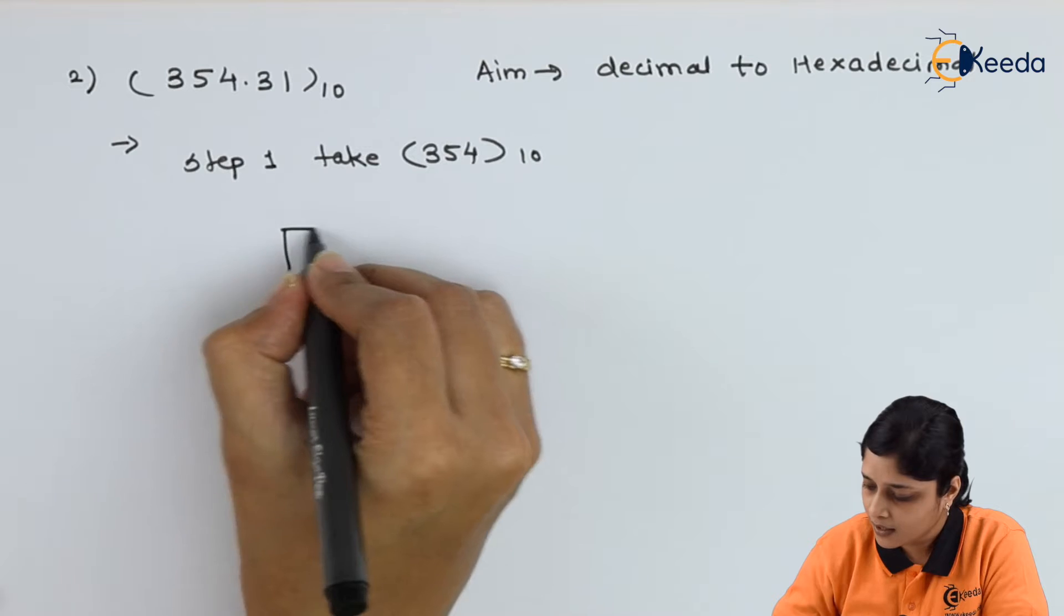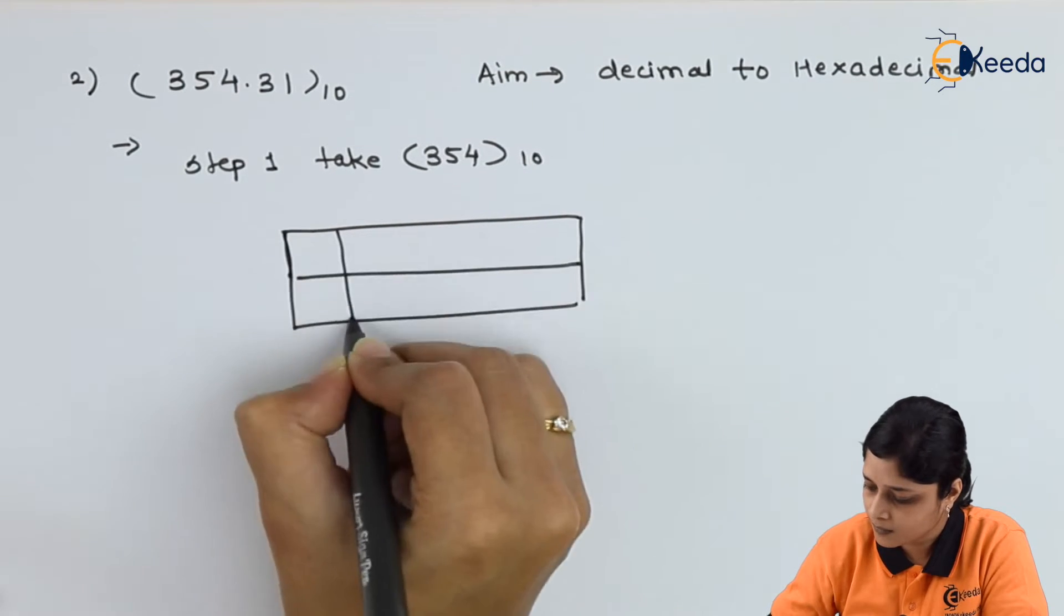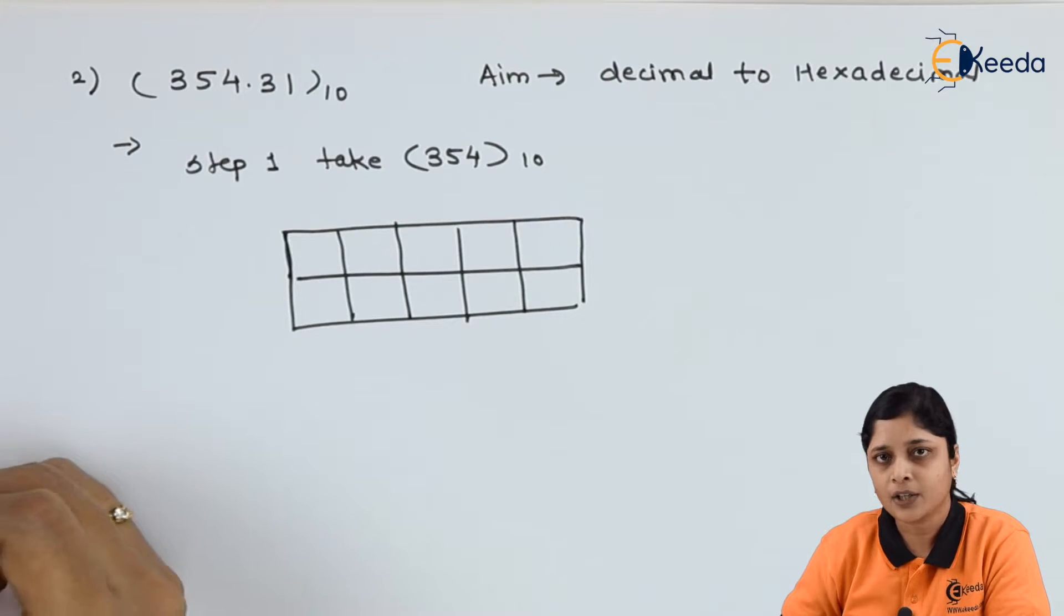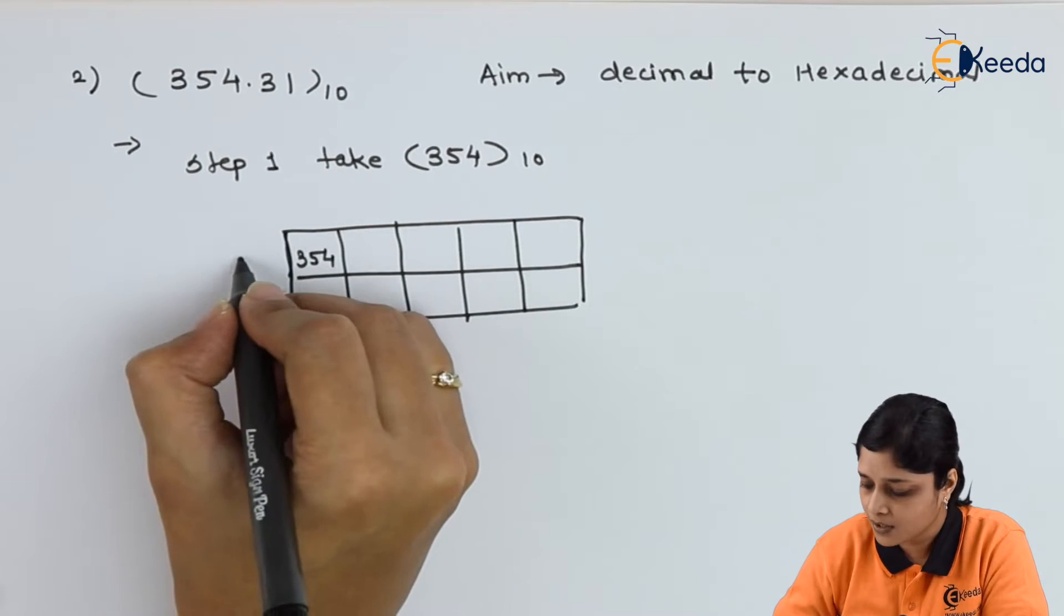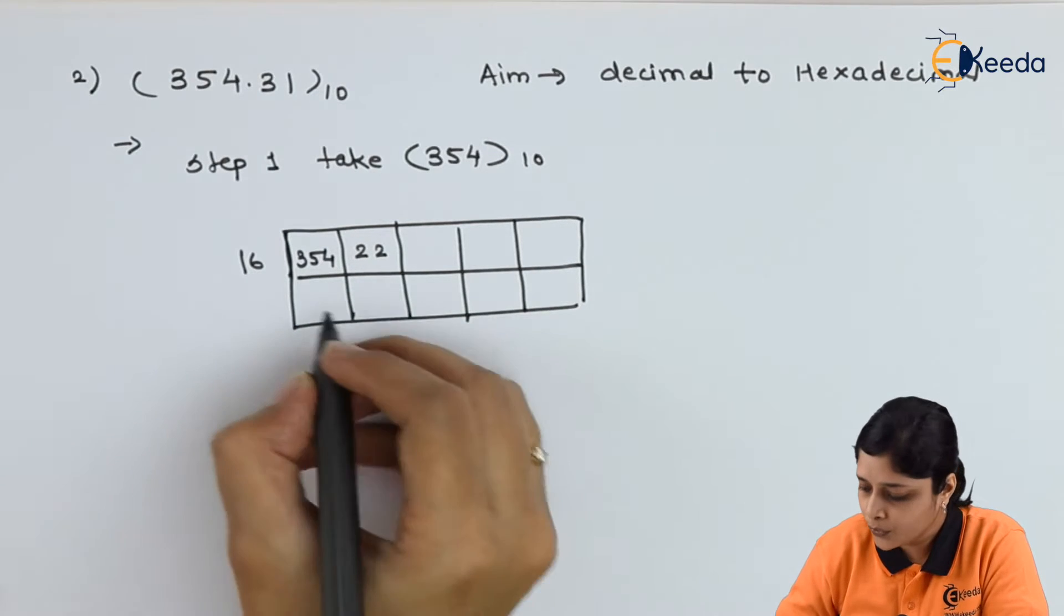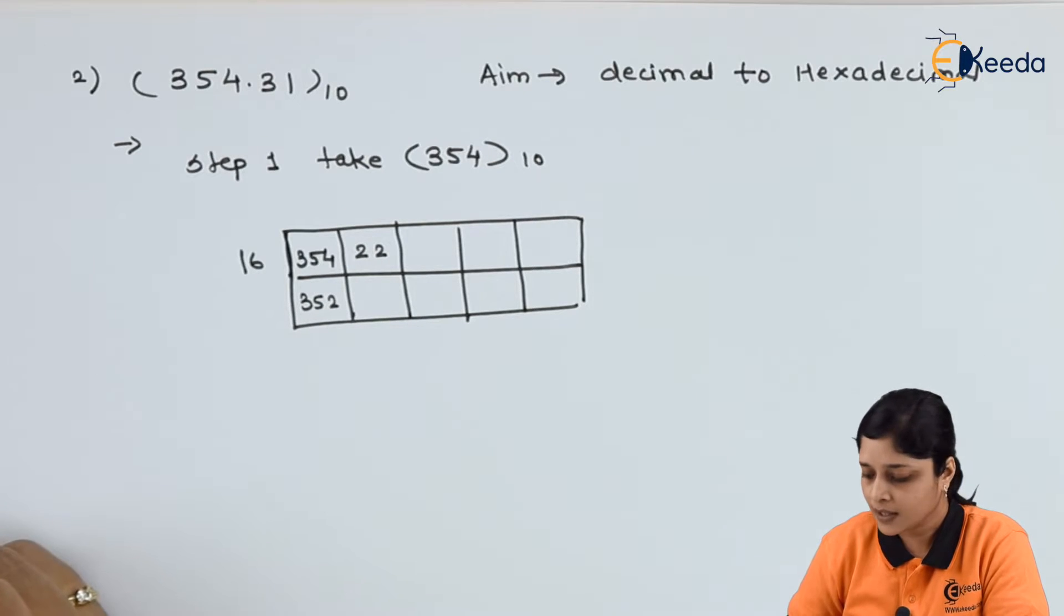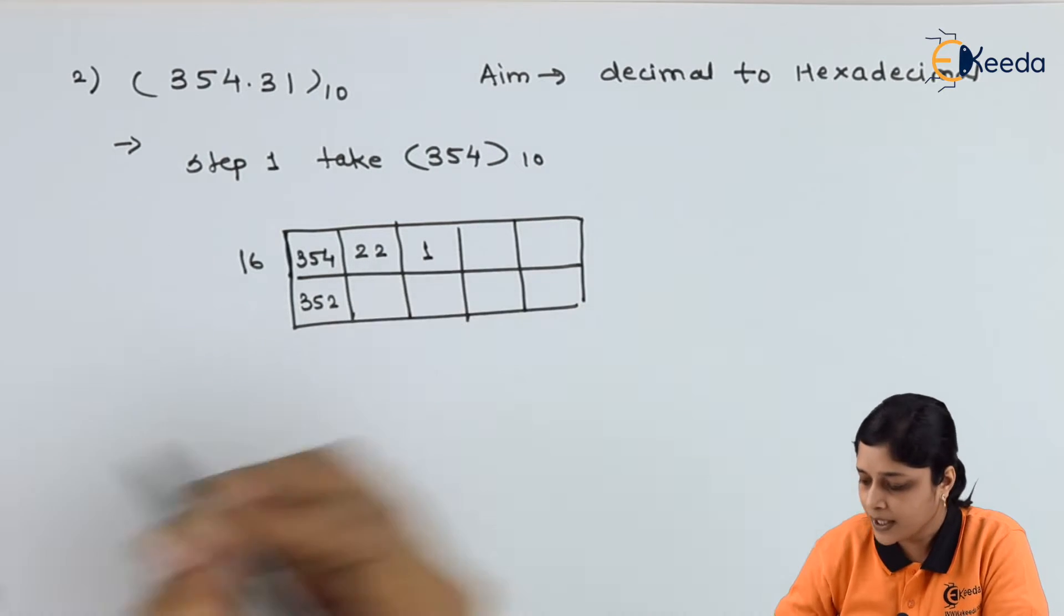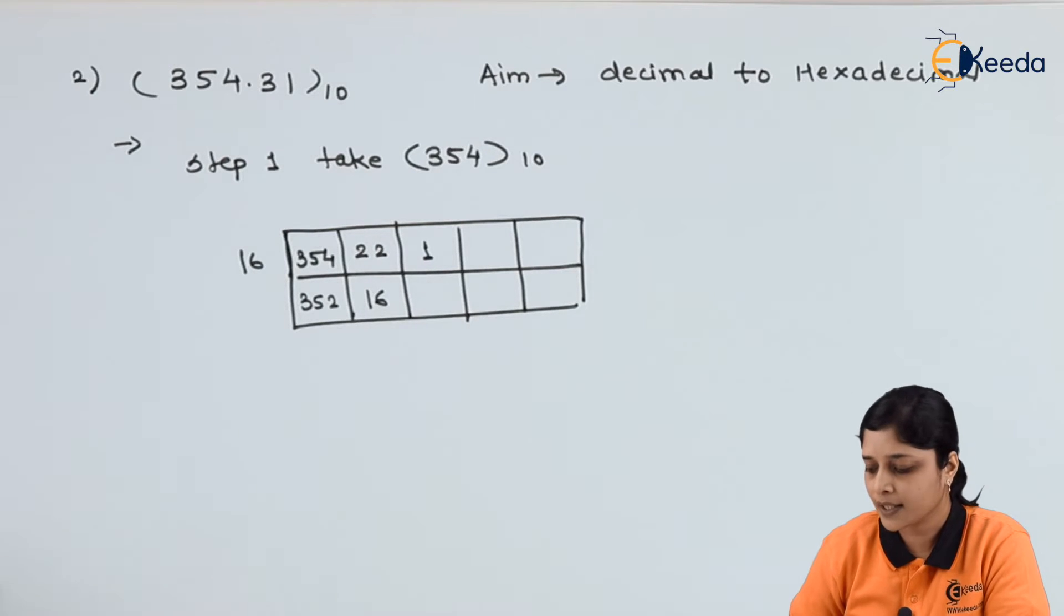For that, again draw one table. Write down 354 divided by 16. So if you multiply it by 22, you will get 352 over here. Then if we multiply by 16, so 1 into 16, you will get 16 here.